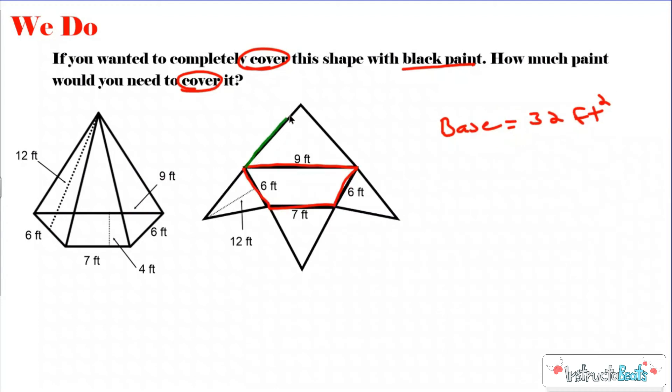Let's take a look at this green lateral face first. We see the base is 9. Now, the slant height of my pyramid was 12, which means the height of all of these triangles that make up my lateral faces will also be 12. When I do 1/2 times 9 times 12, my green lateral face is going to be 54 feet squared.